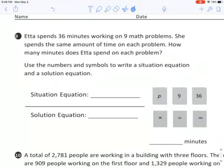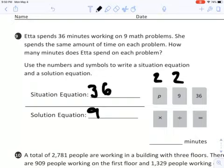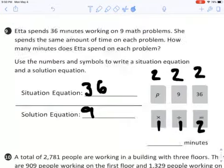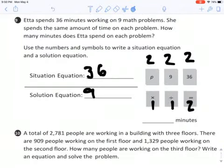Number nine, Etta spends 36 minutes working on nine math problems. She spends the same amount of time on each problem. How many minutes does Etta spend on each problem? Use the numbers and symbols to write a situation equation and a solution equation. Well, your situation equation, just a hint, you're going to start with 36. Your solution equation, you're going to start with nine. You're going to use the variable p two times in your equations, the number nine two times, number 36 two times, and then the equal sign two times, but the division sign and the times sign just once. And then solve, then write down there, how many minutes does she spend on each problem?